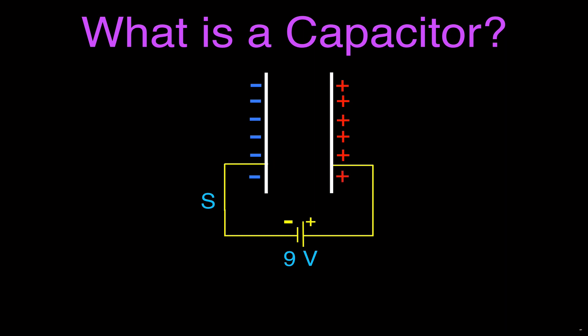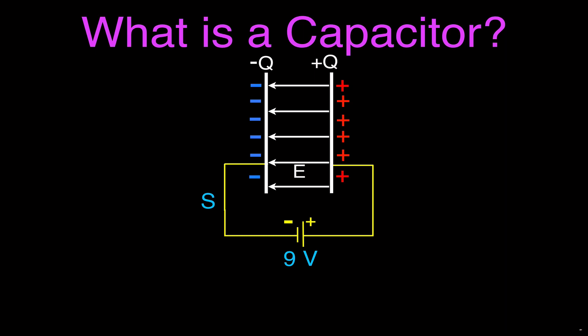Now we have our charged plates. The battery does a certain amount of work — I have a video on that you can link to in the upper right-hand corner. We now have a positively charged plate because electrons have been taken away from it, and a negatively charged plate where those electrons were deposited. We then have an electric field between those two plates, flowing from the positive plate to the negative plate. That is how we get the capacitor charged — simply hook it up to a voltage source so you have a potential difference across the plates, and one plate becomes negative while the other becomes positive. The charge magnitude is the same, but the signs are opposite.